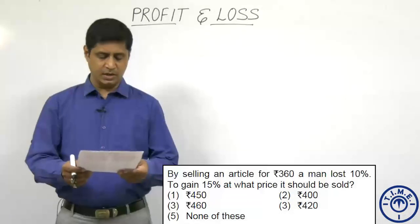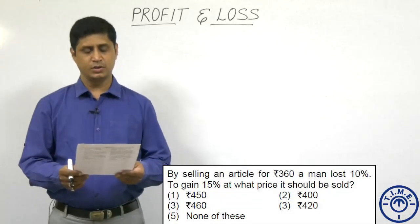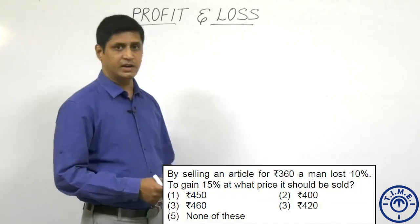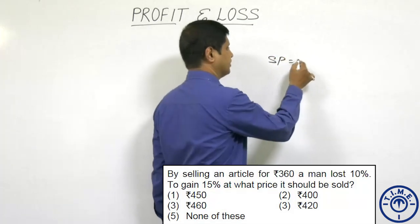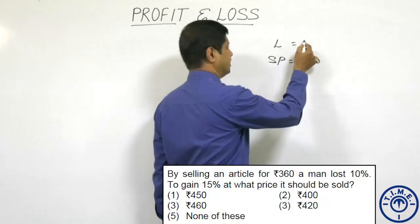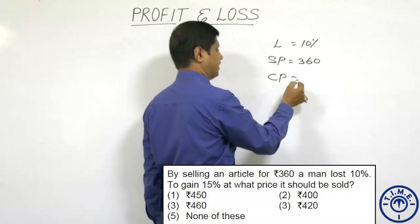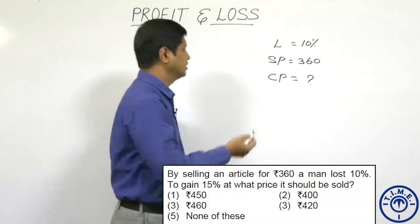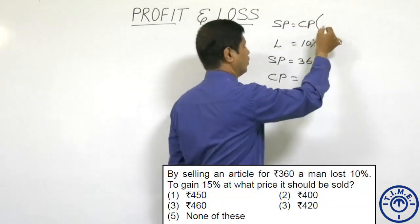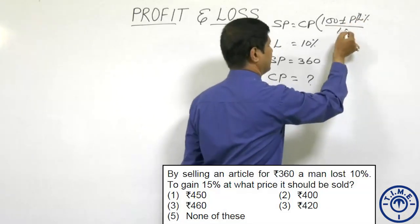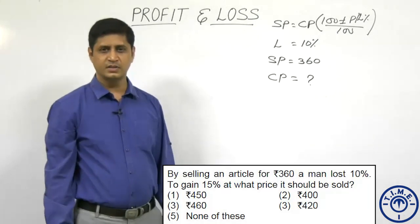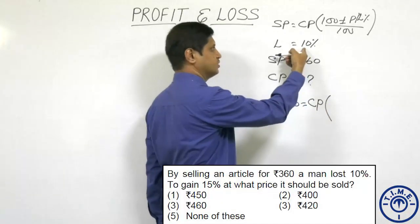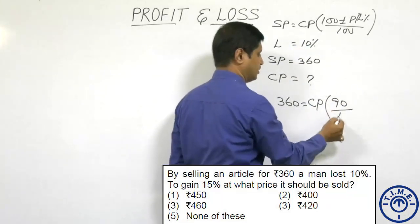By selling an article for ₹360, a man lost 10 percent. To gain 15 percent, at what price should it be sold? The selling price is ₹360 and the loss is 10 percent. Using the formula SP = CP × (100 ± profit/loss percent) / 100: SP is ₹360, and 100 minus 10 is 90 percent.